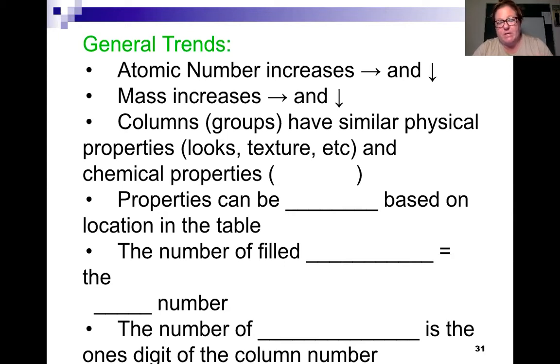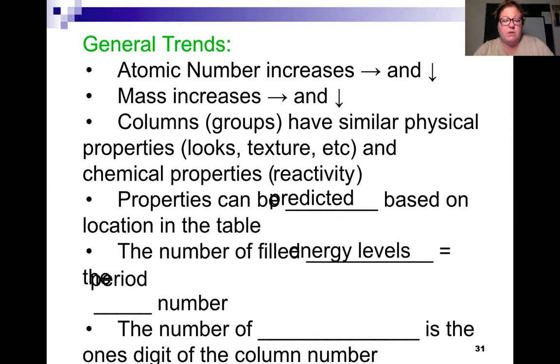The columns or groups have similar physical properties, like look and texture, and also similar chemical properties, such as reactivity. Column one is very reactive, and column 17 are extremely reactive families or groups properties. And also column number one, those are all soft metals.